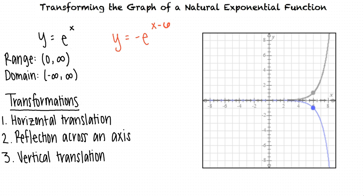Now that we've checked for different types of possible transformations, we see that this is the final graph of y = -e^(x-6).